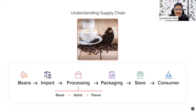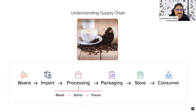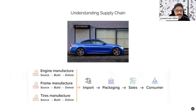From the time the beans are collected till they reach the consumer, this scenario is fairly straightforward because we are sourcing the coffee beans from one country or one exporter. It is a very simple process to understand. But if you extrapolate this and take a look at a more complex supply chain — for example, a car — let's think of Toyota or Ford.